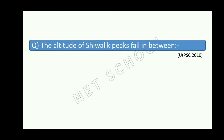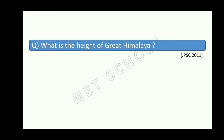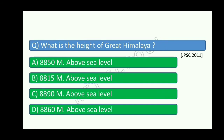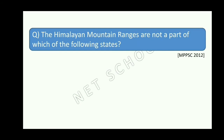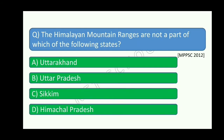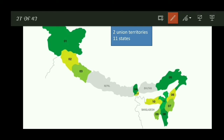The altitude of Shivalik peaks falls between 900 and 1100 meters. What is the height of the Great Himalaya? The Great Himalaya's height is about 6000 meters. The Himalayan mountain ranges are not a part of which of the following states — this question asks which states do not lie along the Himalayan range.